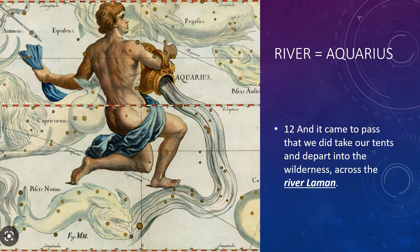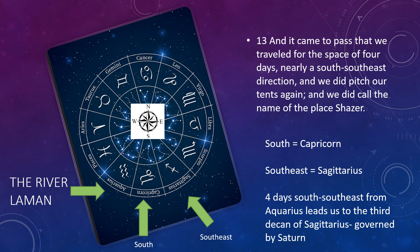Not that Laman is Aquarius, but it's called the river Laman. It says: we did take our tents and depart into the wilderness across the river Laman. So what does that tell us? It tells us that this particular part of the journey is going to correspond on the zodiacal wheel, or the Mazerot, to the symbol of Aquarius. The river Laman is a symbol for Aquarius — it's a water symbol. The waters that pour out from the water bearer, the rivers, lakes, streams — those kinds of things — is the symbol for Aquarius. That's our symbol to start with in this particular section.